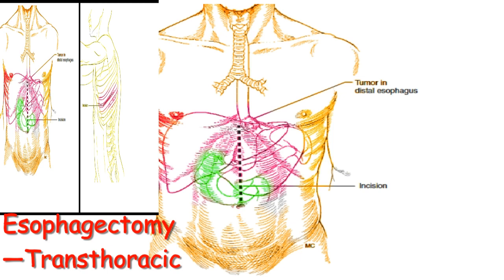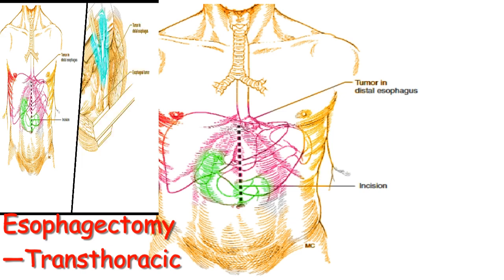The patient is placed supine on the operating table with the head slightly extended. A roll is placed under the patient to slightly elevate the side in anticipation of a thoracotomy. The patient's arm is either elevated and draped out of the field or prepped into the field to allow mobility during the procedure. Alternatively, the patient can be placed supine during the abdominal portion then re-prepped and draped in the lateral position for the thoracic portion. The skin over the entire neck, chest, and abdomen should be prepped with Betadine.